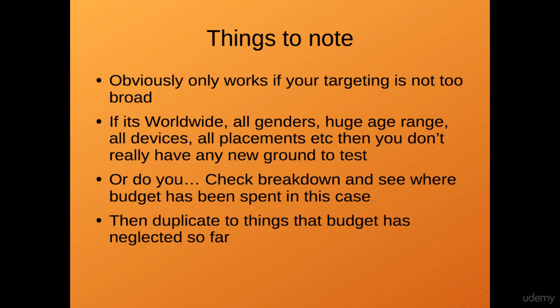Or do you? If you check the breakdown tab by country, age, gender, placement, device, and region, and see where the budget has been spent — you might find that although this ad set is running to all devices, 80% of the budget has been spent on iPhone, 15% on Android, and only 5% on desktop. In which case you would duplicate this ad set to run only on desktop, keeping the original running to all devices. That way you know with 100% certainty where your budget is going to be spent — just on desktop — and then you can see if desktop is going to work.